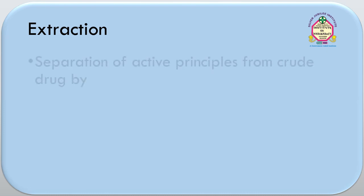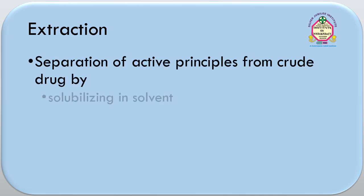So, what is extraction? Extraction is the process of separation of active principle from crude drug by solubilizing in solvent and leaving behind undissolved matter. The solvent which is used for the extraction process is called menstruum, and the undissolved matter which remains behind is called marc.